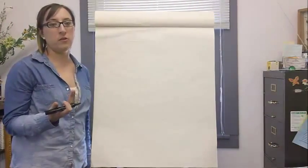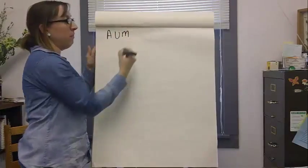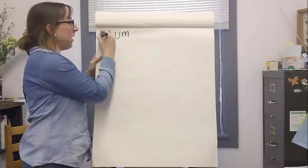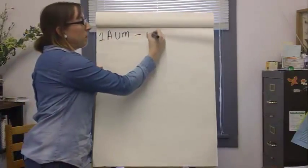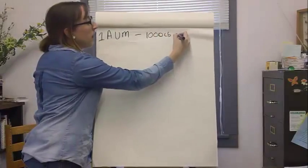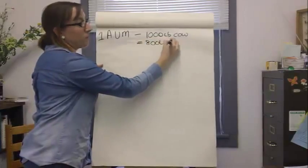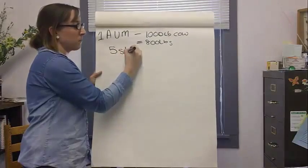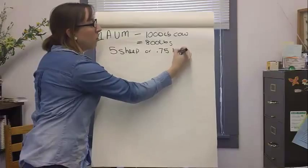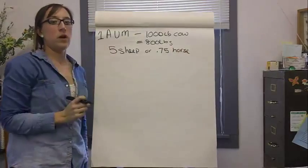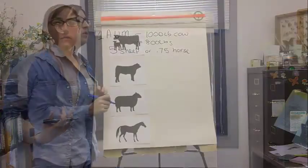Forage demand is expressed in Animal Unit Months or AUMs. One AUM is equivalent to the amount of forage a 1,000 pound cow and her calf can eat in one month, which is roughly 800 pounds. Five sheep or 0.75 of a horse is also equal to 1 AUM. This is a nice way to compare forage demand of all animal types.